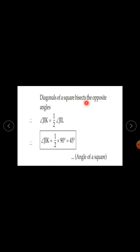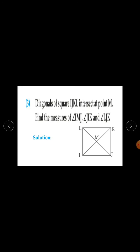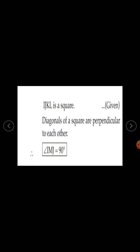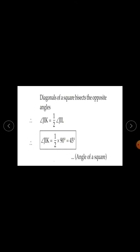Diagonals of a square bisect the opposite angles. Therefore angle JIK is half of angle JIL. The measure of angle JIL is 90 degrees, so angle JIK is half of 90 degrees, which is 45 degrees.